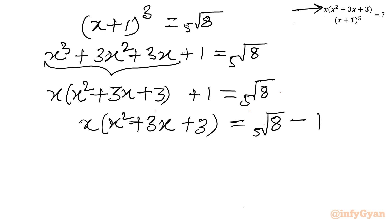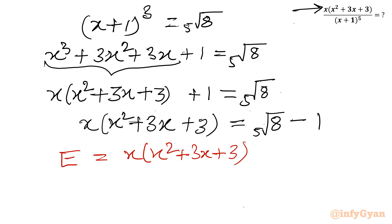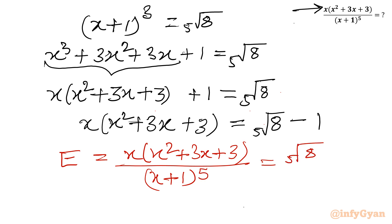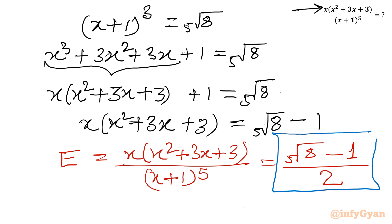Our expression is x(x² + 3x + 3) divided by (x+1)⁵. The numerator is 5th root of 8 minus 1, and (x+1)⁵ equals 2. So the ultimate and final answer for this expression is (5th root of 8 - 1) over 2.